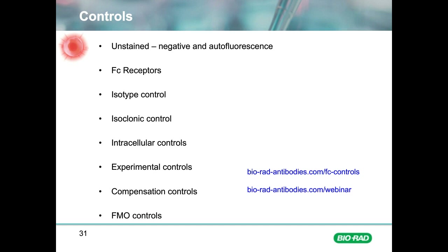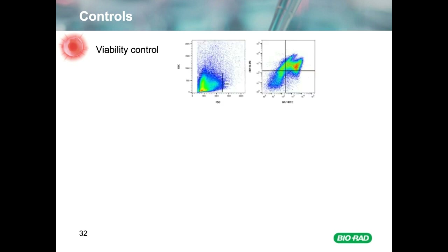One control I want to talk about in more detail is the use of a viability marker to remove dead cells from your experiment. Dead cells have increased autofluorescence and increased binding of antibodies through non-specific interactions. The result is that the negative population will appear more positive, the dynamic range of staining will be reduced, and weakly positive or rare cells may not be identifiable from the negative population. Although dead cells often have a different forward and side scatter profile compared to live cells, this is not always true.